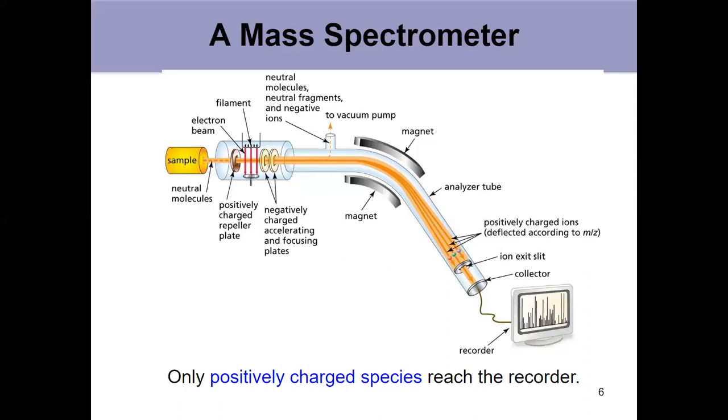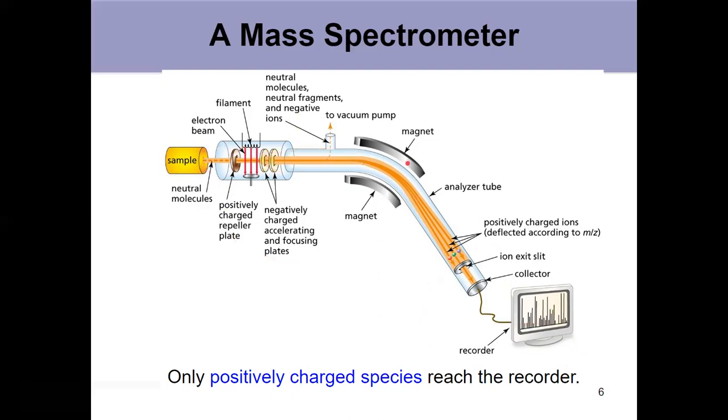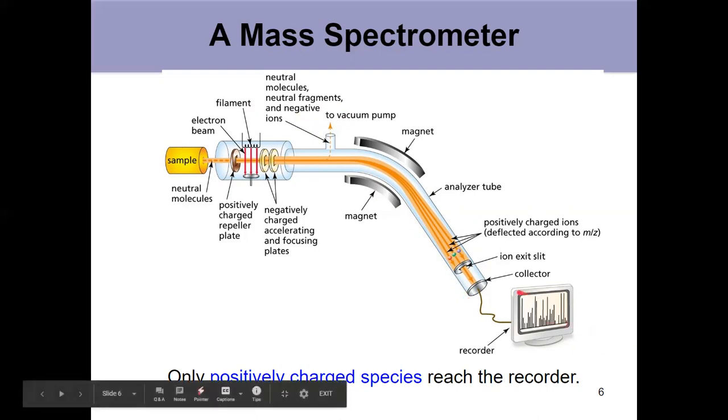Getting to the question of how these things are detected, only positively charged species get detected at the end of the day. Your positively charged fragments are what get drawn down between these negatively charged plates, which then accelerate down this tube. If they're not positively charged, they get kicked out in the vacuum pump.